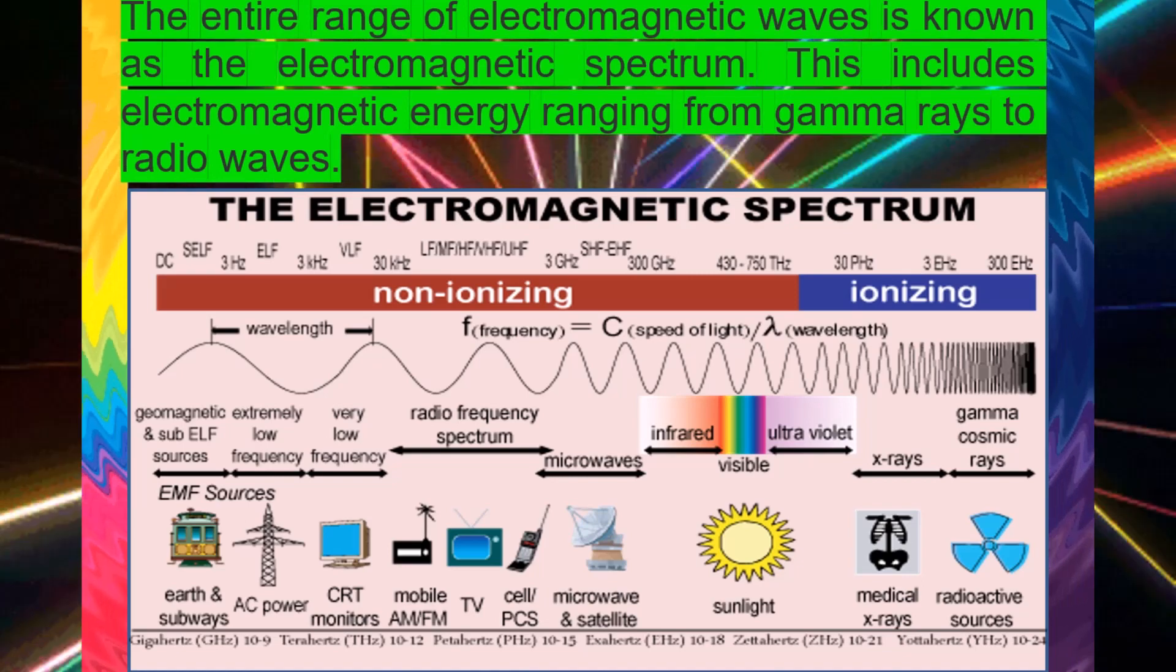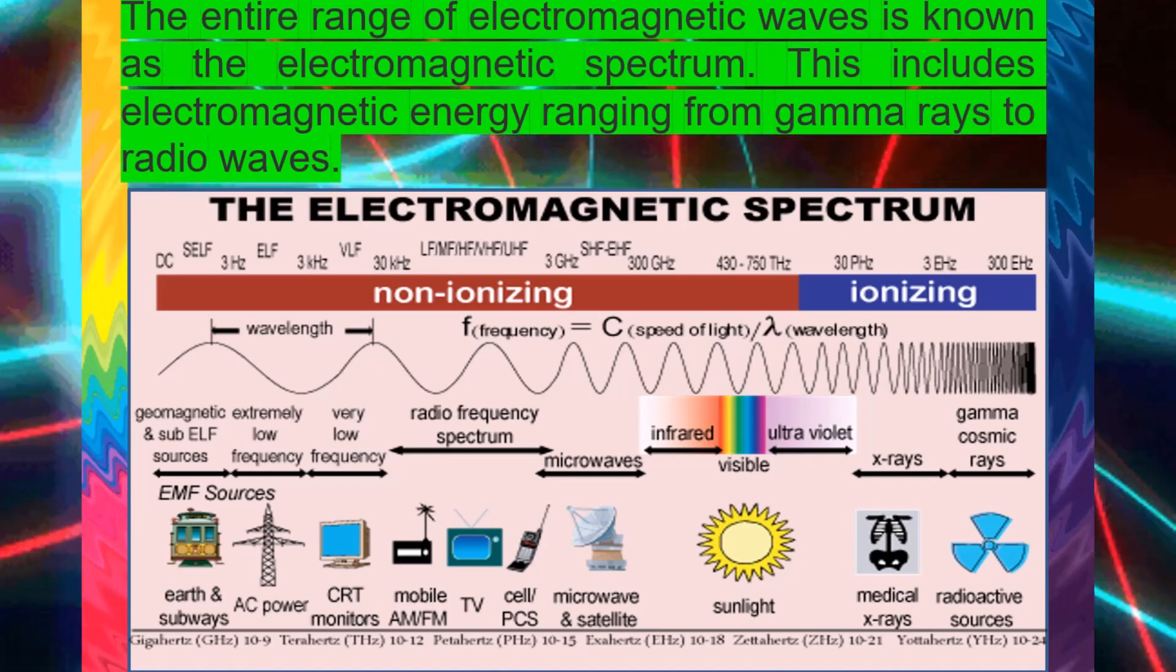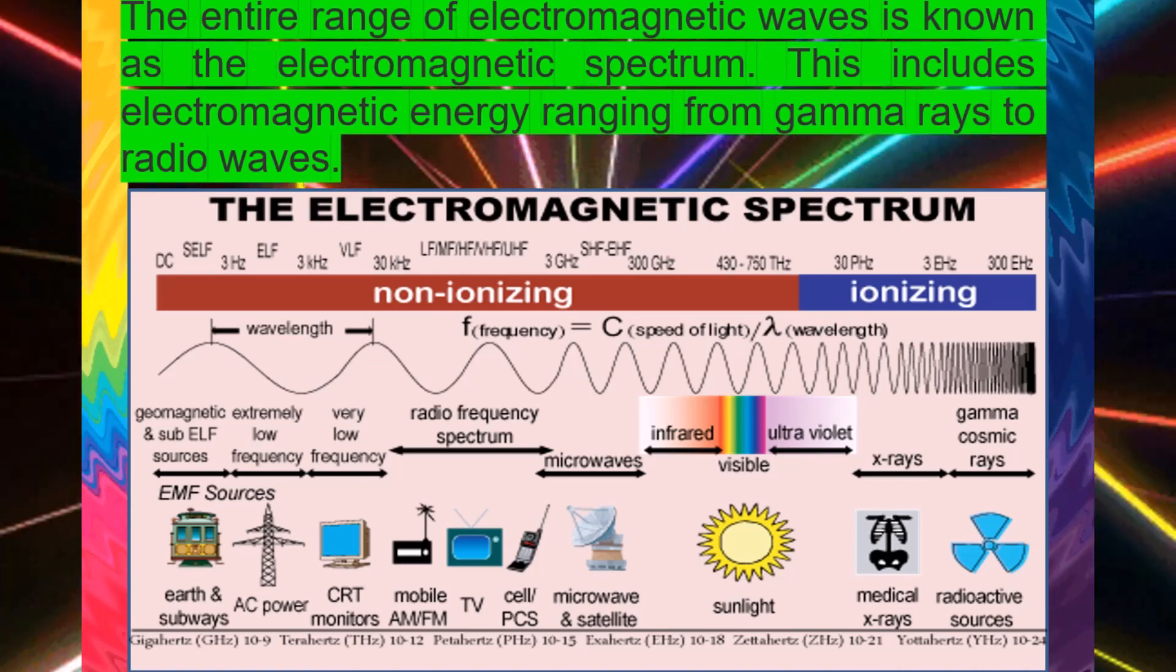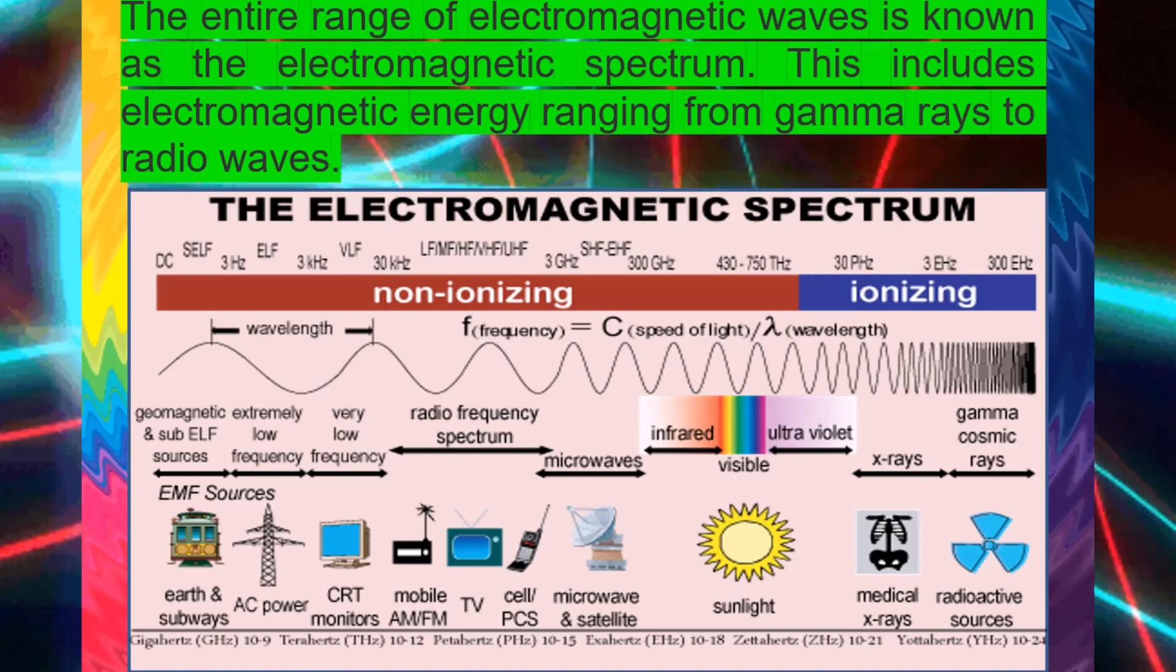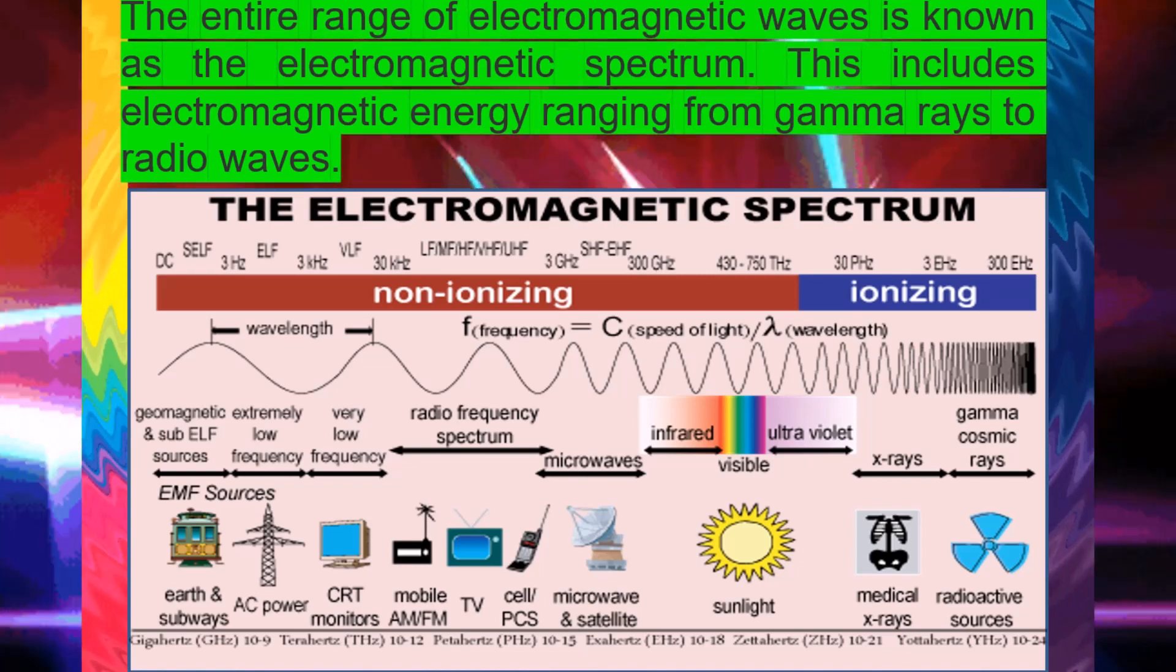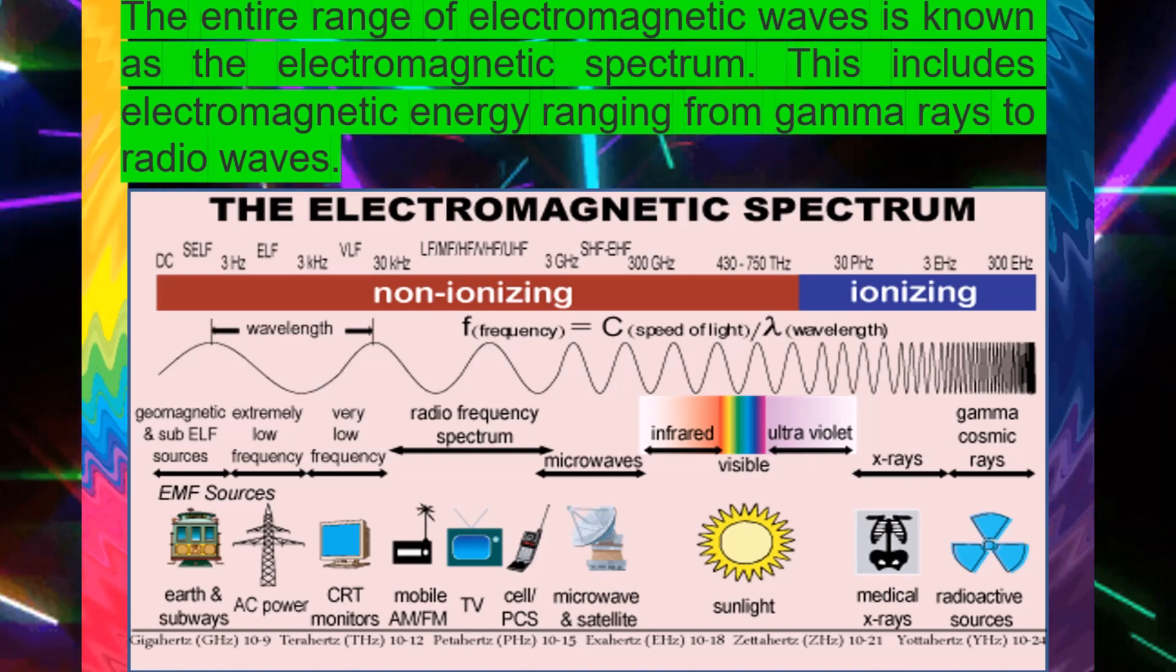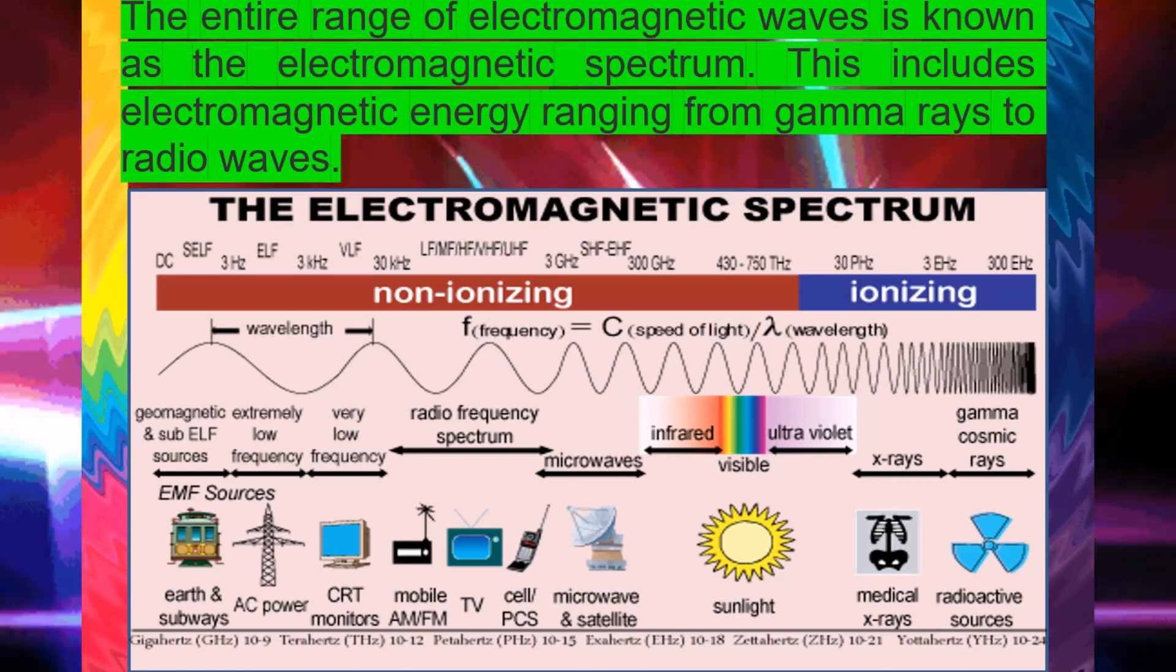Electromagnetic radiation is generated by a moving electric charge, that is, by an electric current. As you will see when you study electricity, an electric current generates both an electric field, E, and a magnetic field, B. These fields are perpendicular to each other. When the moving charge oscillates, as in an alternating current, an EM wave is propagated.